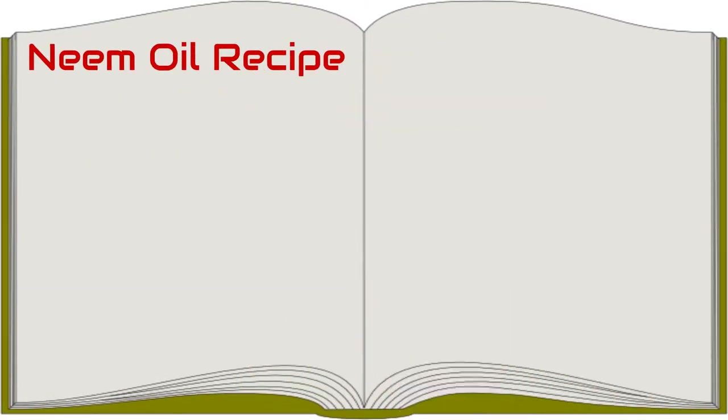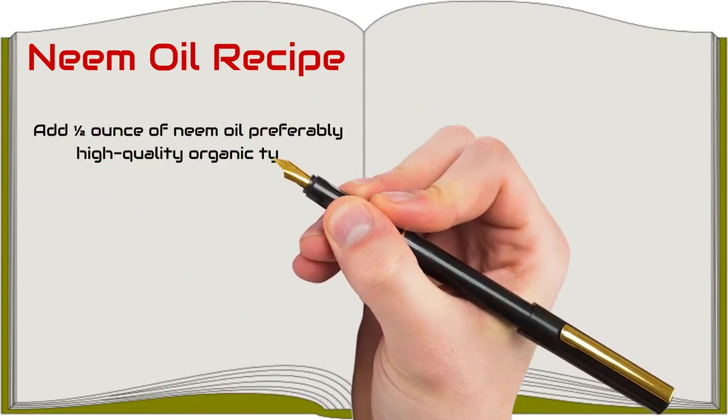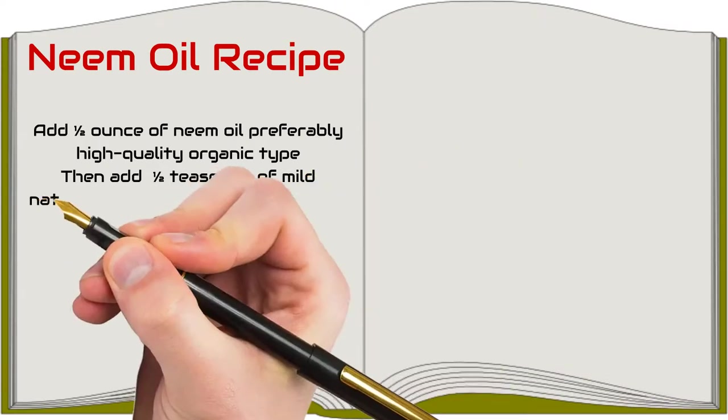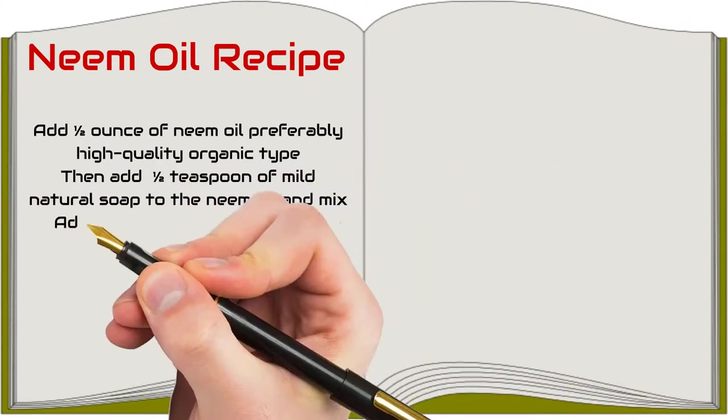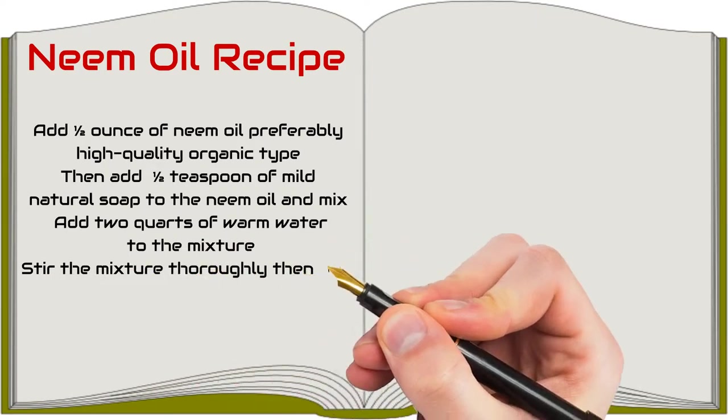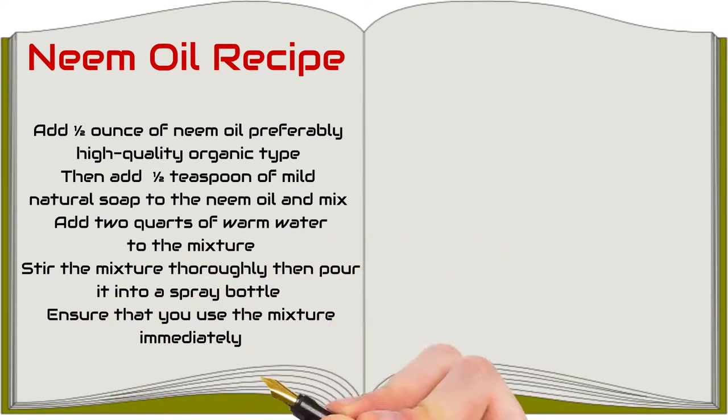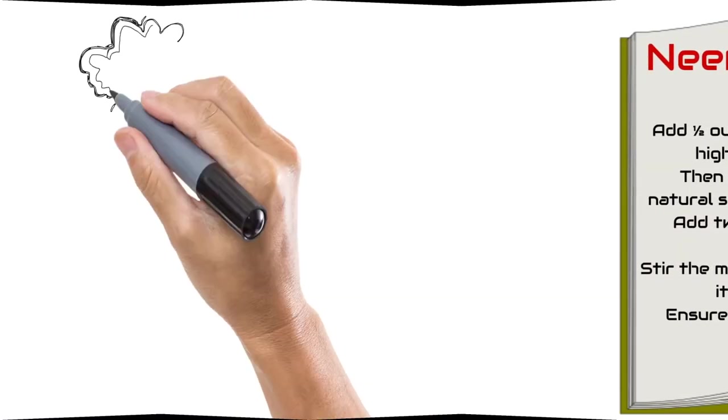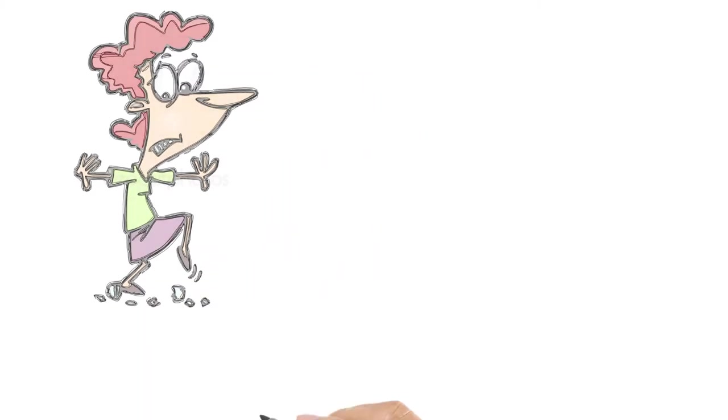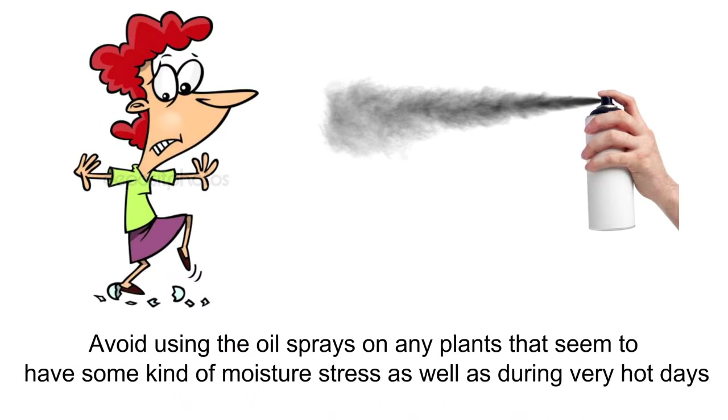For best results from your neem oil recipe, ensure that you follow the following steps keenly. Add half an ounce of neem oil, preferably high-quality organic type. Then add half a teaspoon of mild natural soap to the neem oil and mix. Add two quarts of warm water to the mixture. Stir the mixture thoroughly, then pour it into a spray bottle. Ensure that you use the mixture immediately. Avoid using the oil sprays on any plants that seem to have some kind of moisture stress as well as during very hot days.